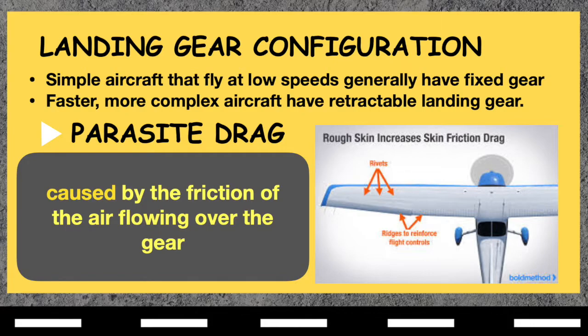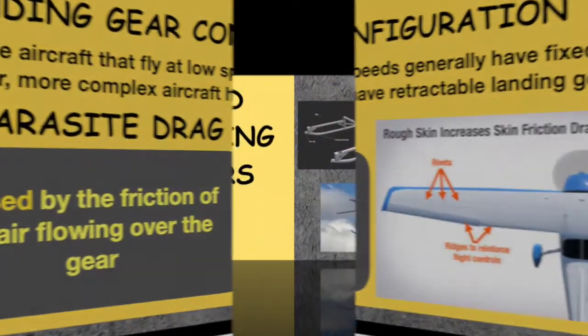On very light, slow aircraft, the extra weight that accompanies a retractable landing gear is more of a detriment than the drag caused by fixed gear. Lightweight fairings and wheel pants can be used to keep drag to a minimum.